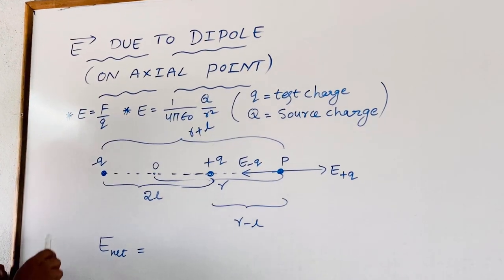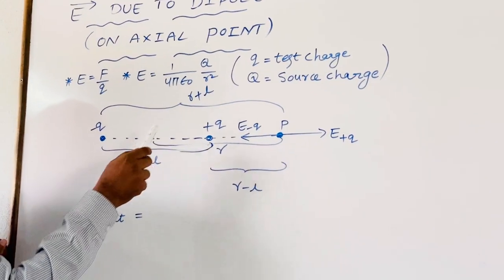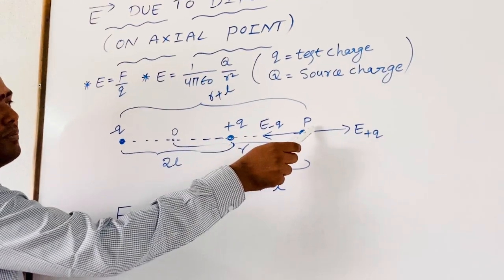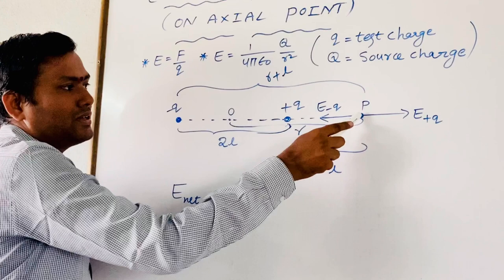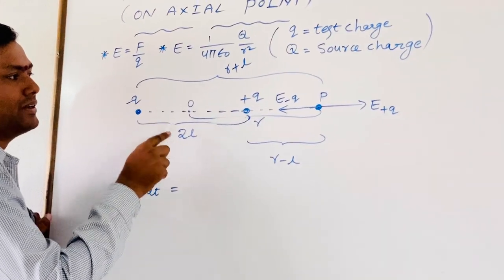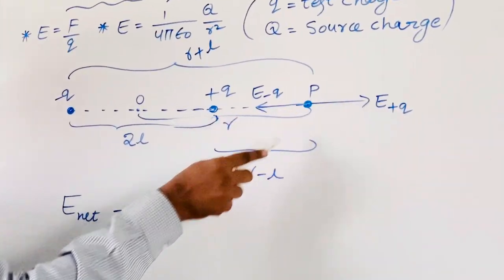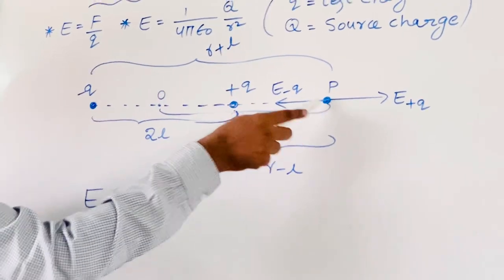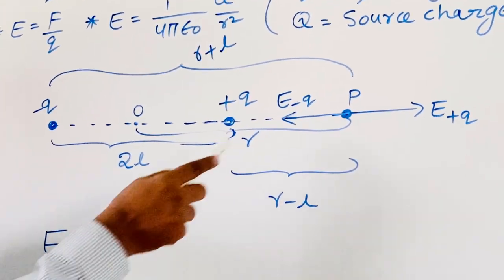Now consider the dipole as shown in the figure. This is charge minus Q, this is charge plus Q, and both charges are separated by the distance 2L. We are taking some point P that lies on the axial of the dipole at distance R from its center. Plus Q lies at distance R minus L from point P, and minus Q lies at distance R plus L from point P.